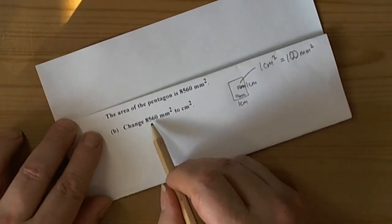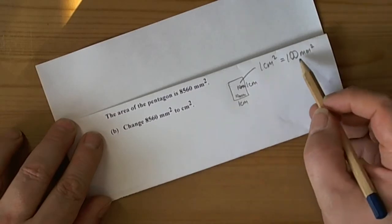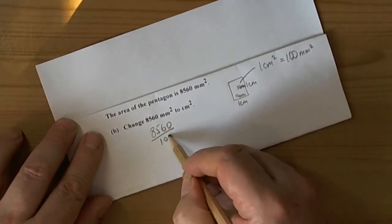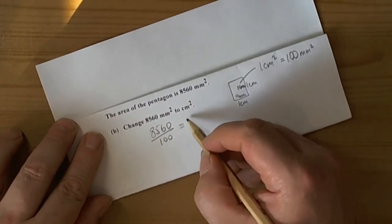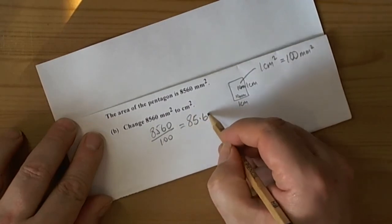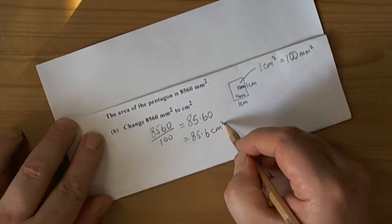So to change 8560 square millimeters to centimeters squared or square centimeters, then we'd have to do 8560 divided by 100. Dividing by 100 moves numbers down twice, so 8560 becomes 85.60, which is 85.6 square centimeters.